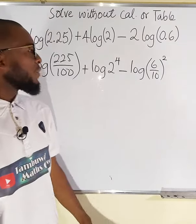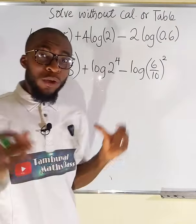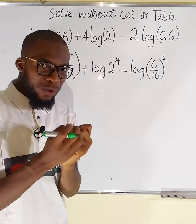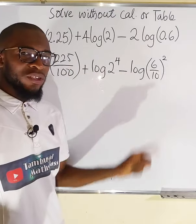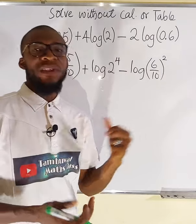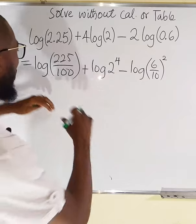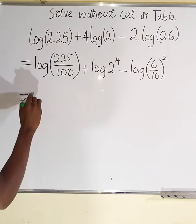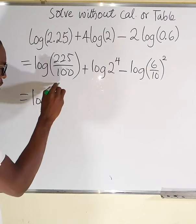Moving on. Now we are going to apply one law that says if you have addition you can multiply and give them a single log. If you have subtraction you divide and give them a single log. So we can now assign them all with a single log.